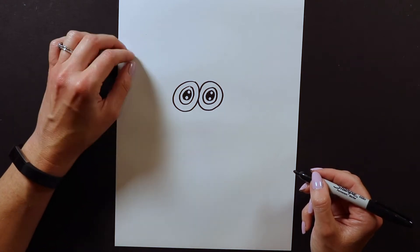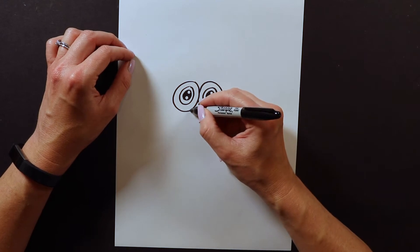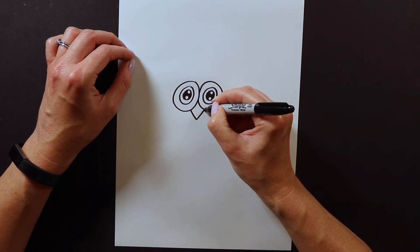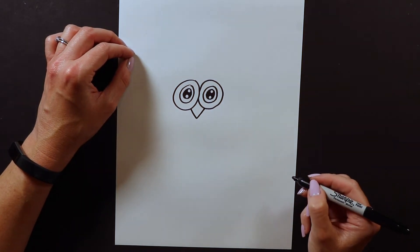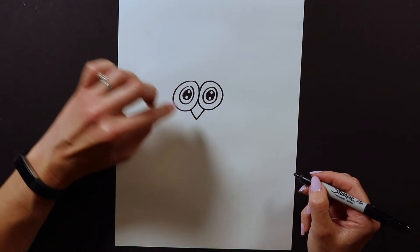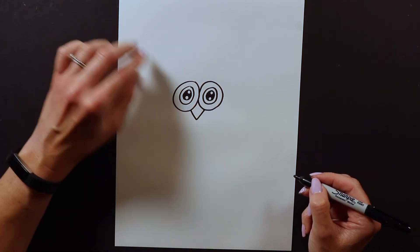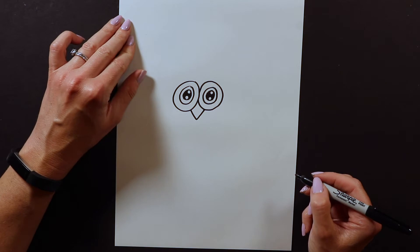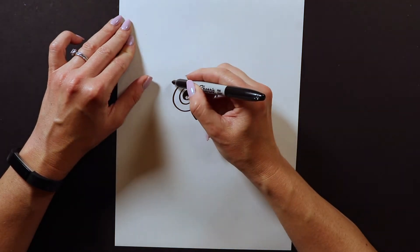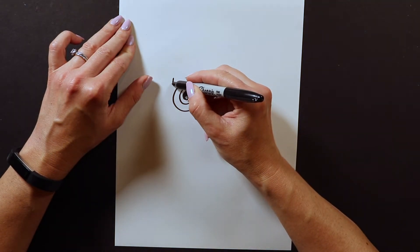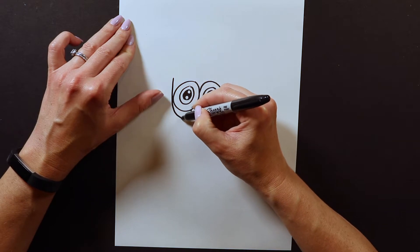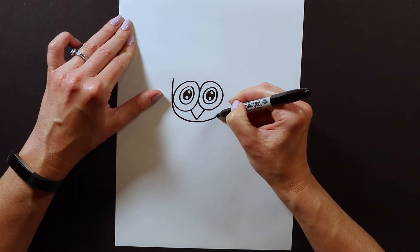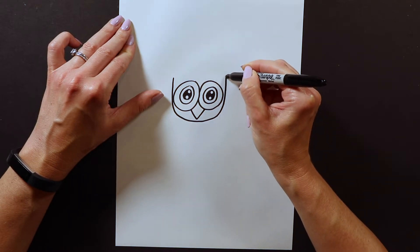After you have those eyes on I'm gonna add a little beak. It's just a down, up, that's it. Owl's beaks are pretty easy. Then we're gonna put on the rest of the head. I'm gonna start here next to the eyes and swoop just under the beak and then back up like this.